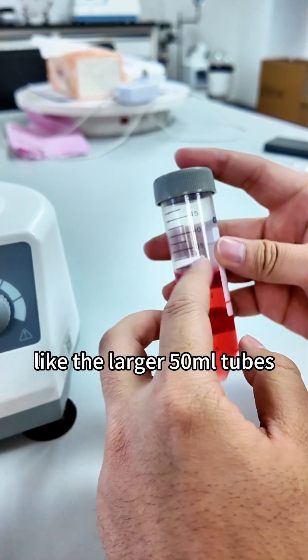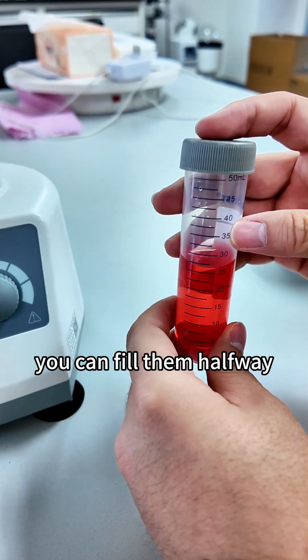For single-tube vortex, like the larger 50ml tubes, you can fill them halfway, and that should be enough.